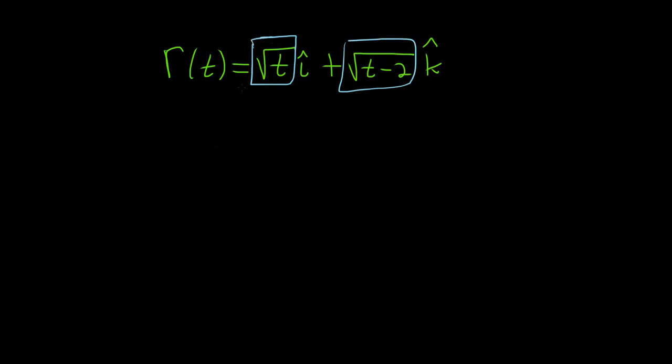In order for this function to be continuous, it has to be defined. Whatever is in the square root cannot be negative, so it has to be greater than or equal to zero. And this also has to be defined—the piece in the square root has to be non-negative, greater than or equal to zero. So this means t is greater than or equal to two.